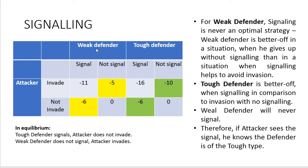Signaling is simply too costly for the weak defender. Weak defender would prefer to give up without any fight and lose -5 rather than signal and lose -6 even without invasion. Based on this, weak defender will never signal — even knowing for sure that signaling will prevent invasion, it still makes no sense. For the tough defender, however, signaling makes sense: tough defender prefers signaling and no invasion (-6) over no signaling and invasion (-10). Therefore weak defender never signals; if attacker sees a signal, it's certainly a tough defender. In equilibrium: tough defender signals and attacker does not invade; weak defender does not signal and attacker invades.